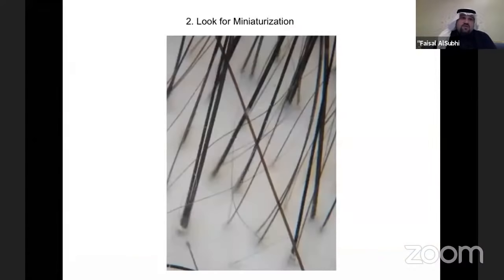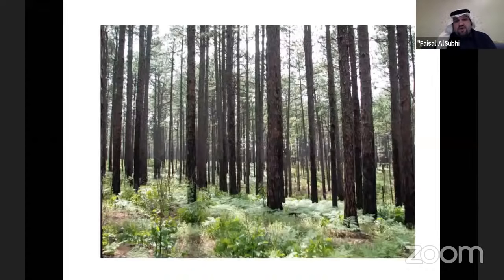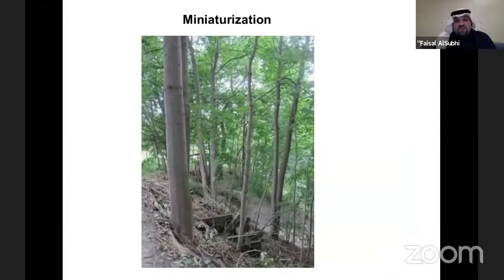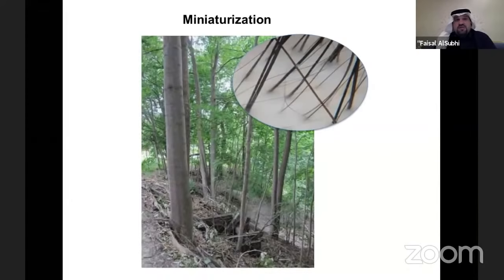The second step is to look for miniaturization, meaning hair shafts of different and variable thickness. Using a forest analogy — if you see trees of all the same thickness, that's normal; if you see very thick trees alongside very thin ones and small branches, that is miniaturization. It is a hallmark finding of androgenetic alopecia, also called female pattern hair loss, which is the most common cause of hair loss in both men and women.